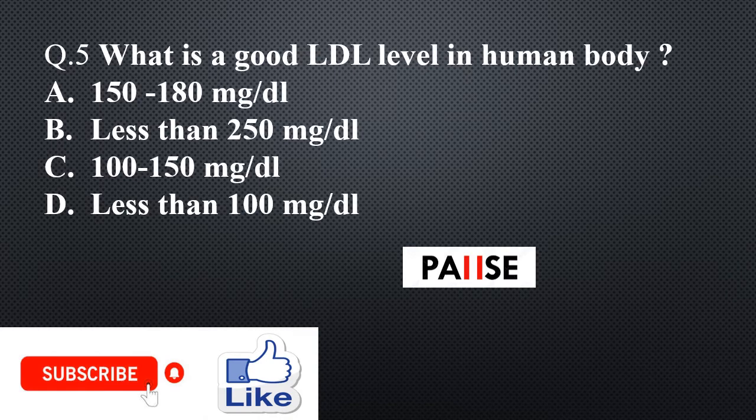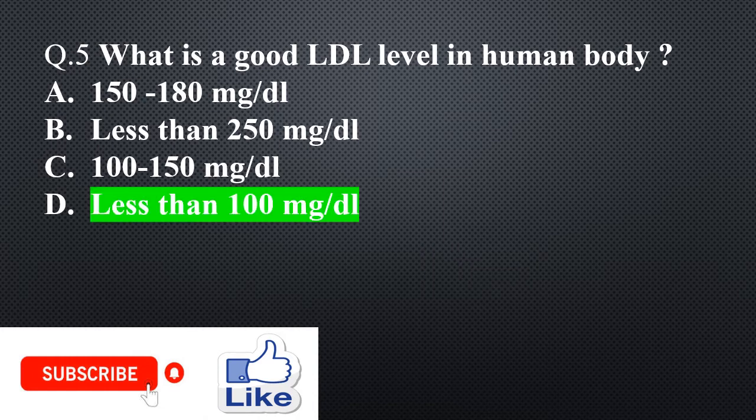Question 5. What is a good LDL level in the human body? Option A: 150 to 180 mg per dL, Option B: Less than 250 mg per dL, Option C: Less than 100 mg per dL, Option D: Less than 100 mg per dL. The right answer is Option D: less than 100 mg per dL.